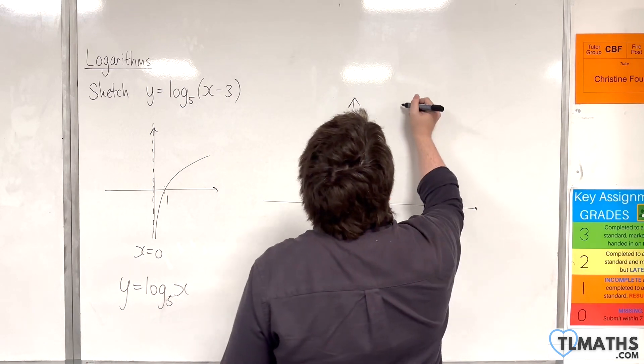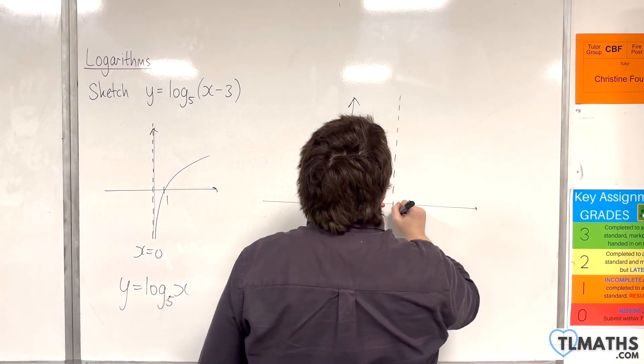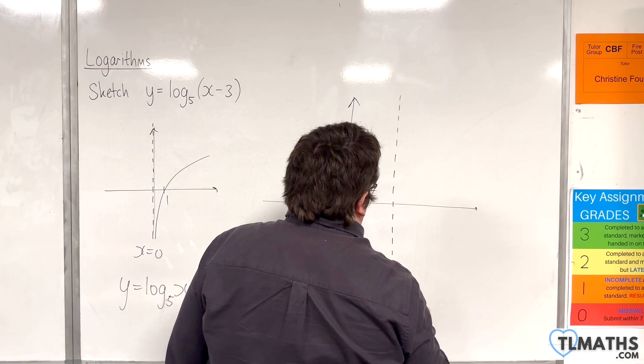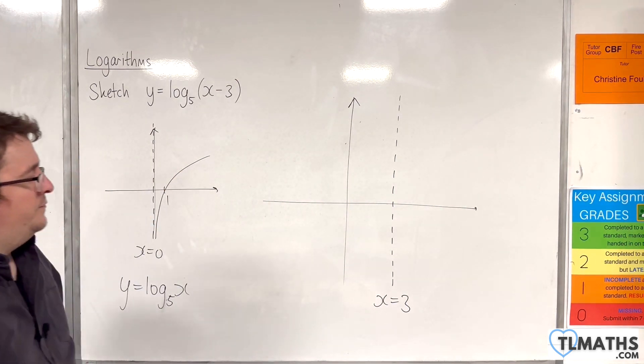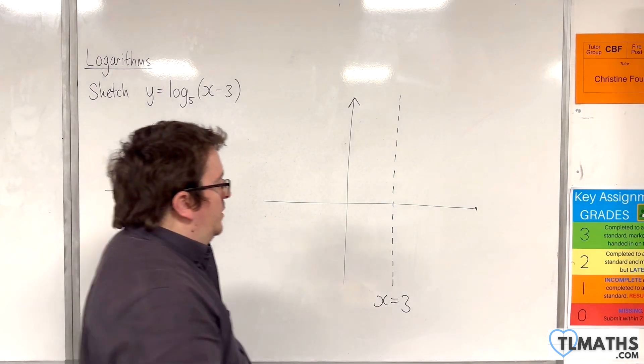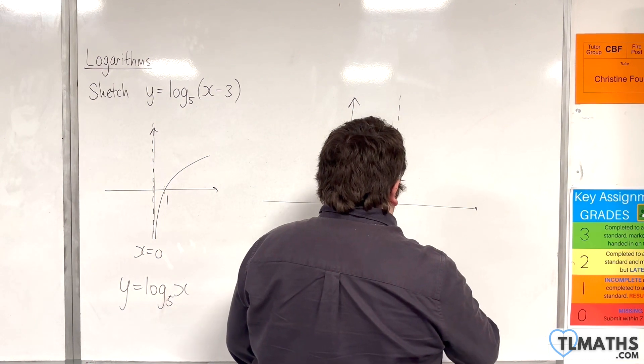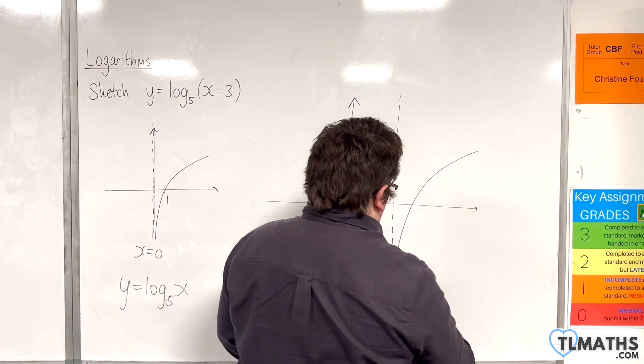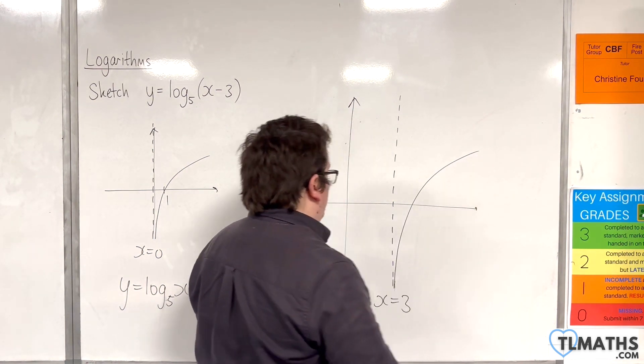So our sketch, I'm going to start off by drawing a vertical asymptote at x equals 3. Then your curve is going to look like this. Wasn't particularly good, so something like that.